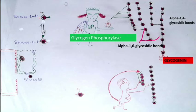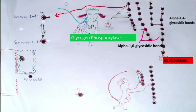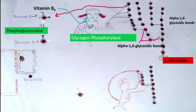The enzyme needed for destruction of glycogen is glycogen phosphorylase. It throws phosphates onto the alpha-1,4-glycosidic bonds, releasing glucose-1-phosphate one by one. Note that this enzyme requires vitamin B6 — its coenzyme is pyridoxal phosphate, a derivative of vitamin B6.